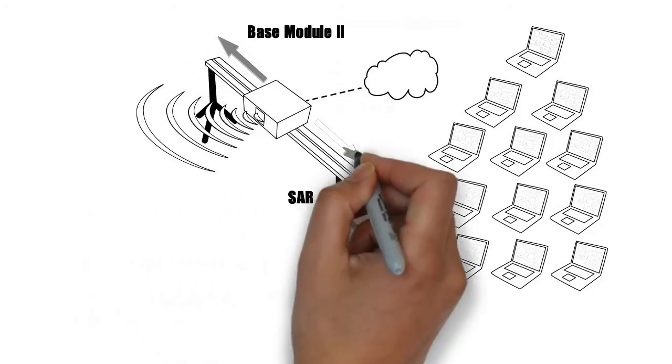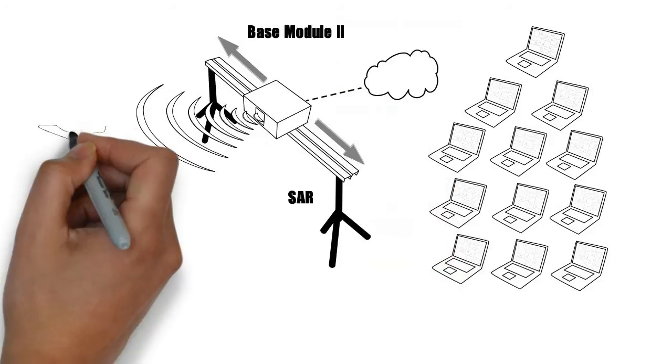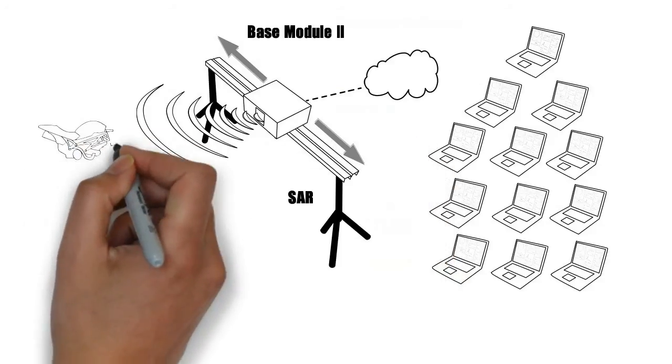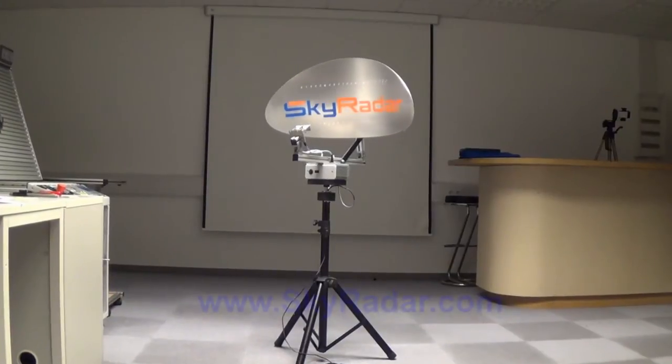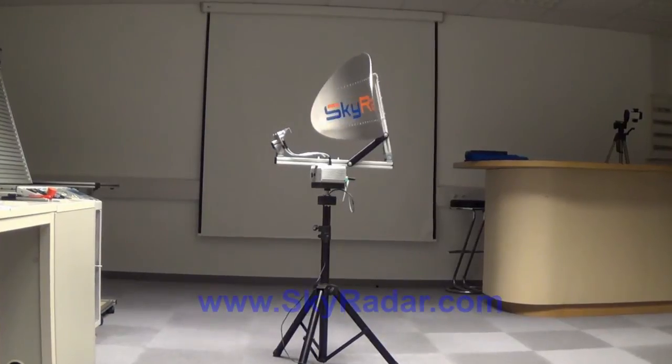SkyRadar. You can start with a single module, like the base module 1 or 2, and add more modules step by step. Or, if you don't want to wait to benefit from the many units and possibilities, get it all at the same time.